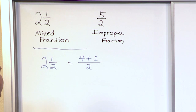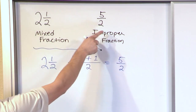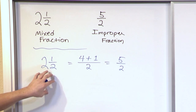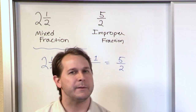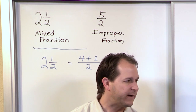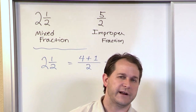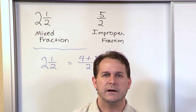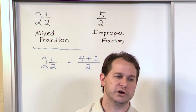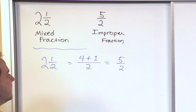So you put the four and then you add to it whatever the numerator is — in this case it's one. Then you draw your fraction bar and the denominator, the number two, just stays the same. You don't add it or anything. Four plus one is five, so here we have five halves. Two and a half pumpkin pies is exactly the same amount as five halves of a pumpkin pie.